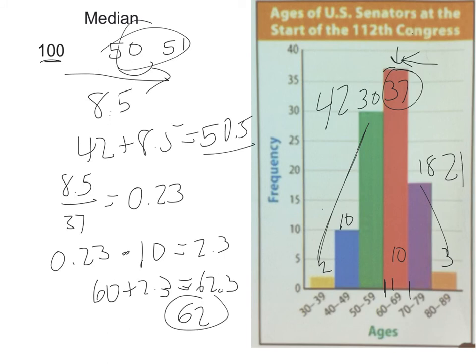Again remember, these are just estimates. We don't know the exact value because we don't have the exact numbers, but this is a reasonable estimate, more reasonable than you would get with just kind of saying it's somewhere between 60 and 69.